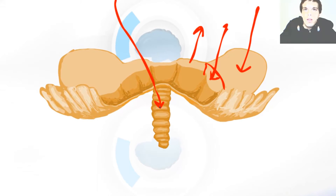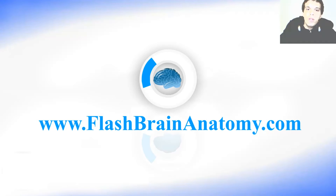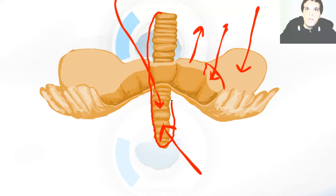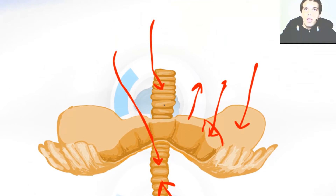This over here is the uvula, and this over here is the pyramid of the vermis. Now the vermis — let me draw the complete vermis. All this is vermis. Up there we have the central lobe, and we have the lingula of the cerebellum. All of that belongs to the vermis.